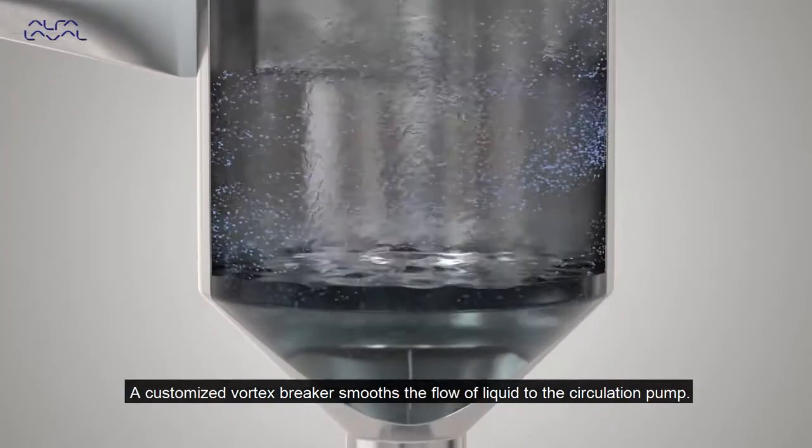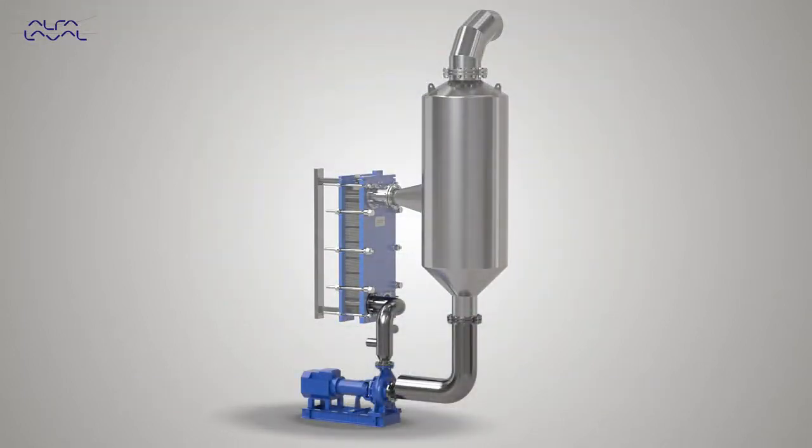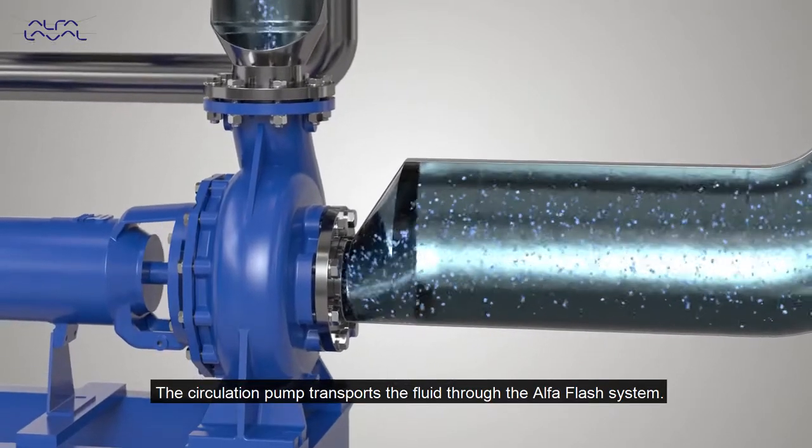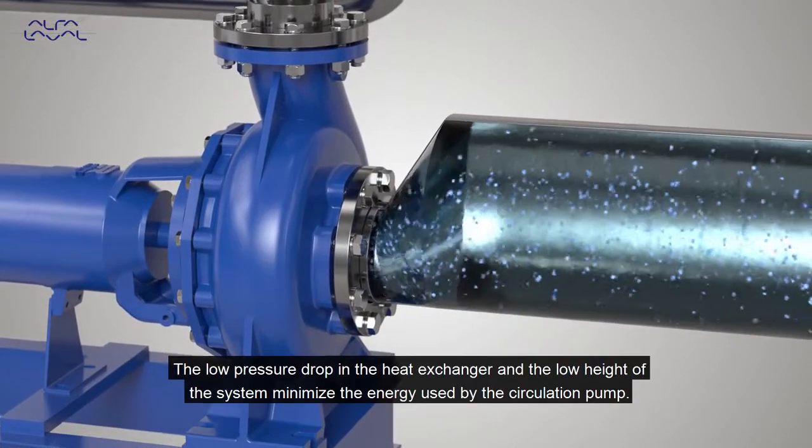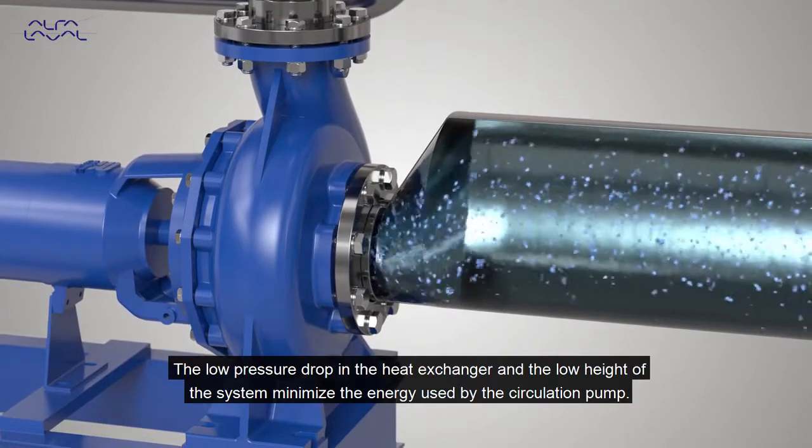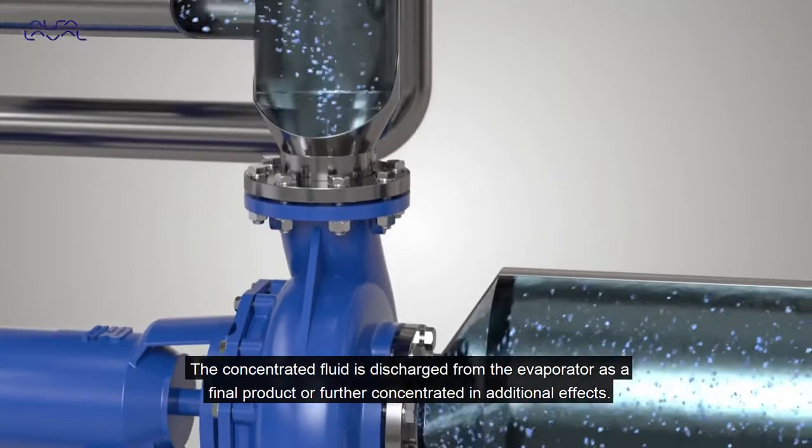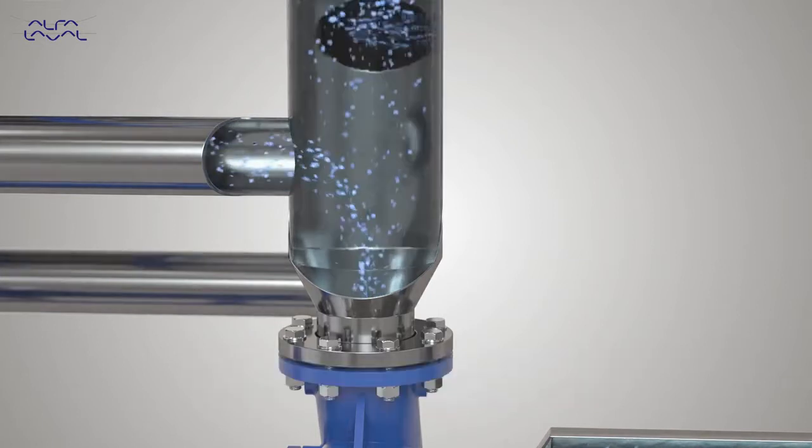A customized vortex breaker smooths the flow of liquid to the circulation pump. The circulation pump transports the fluid through the Alpha Flash system. The low pressure drop in the heat exchanger and the low height of the system minimize the energy used by the circulation pump. The concentrated fluid is discharged from the evaporator as a final product or further concentrated in additional effects.